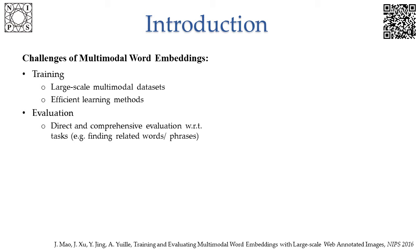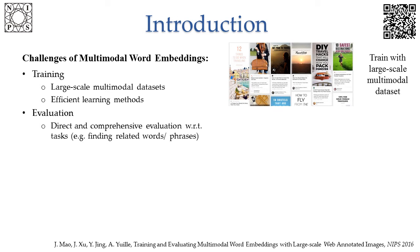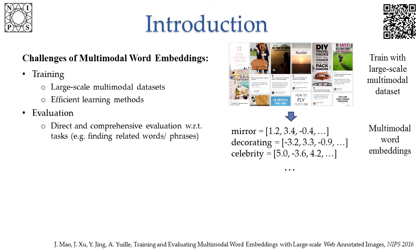For example, the task of finding related words or phrases. In this work, we introduce a large-scale dataset with 300 million sentences describing over 40 million images, crowd-sourced and downloaded from publicly available pins on Pinterest. A pin is an image with user-annotated sentence descriptions. We train proposed models on those datasets to get the dense vector representation of words with semantic and relational information.